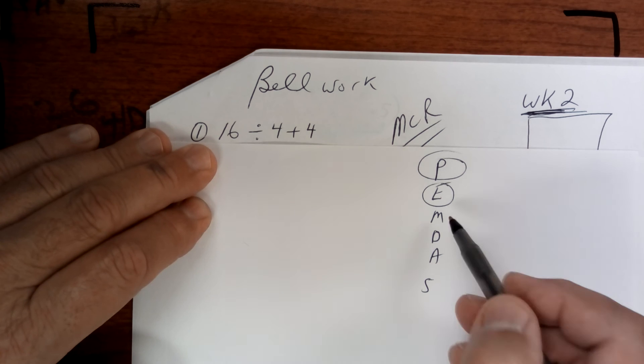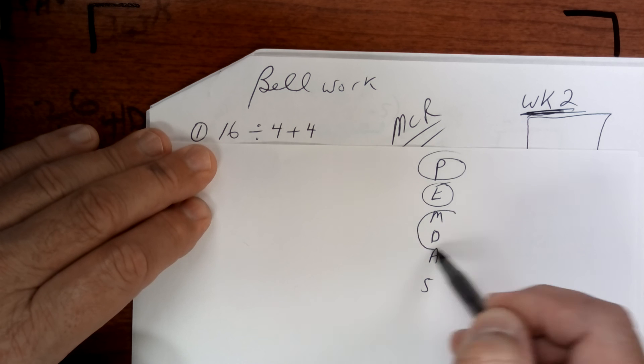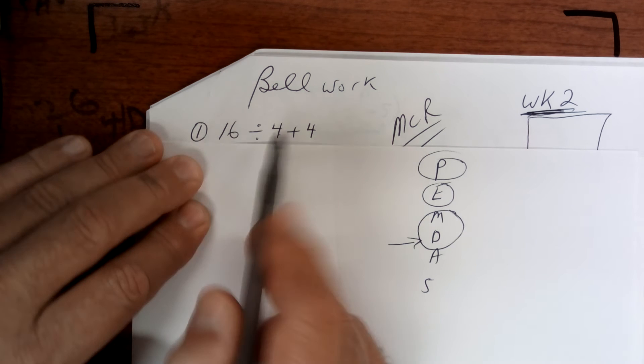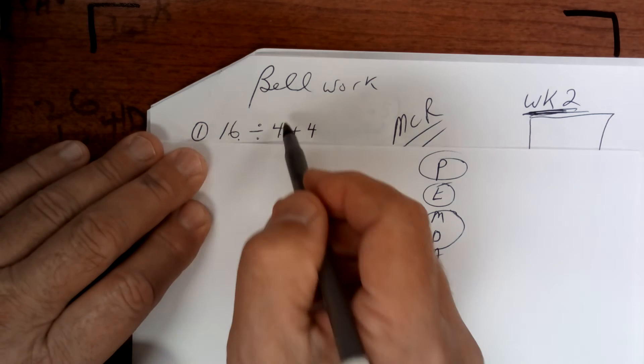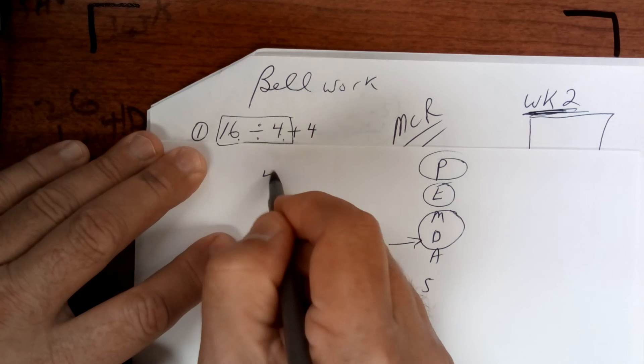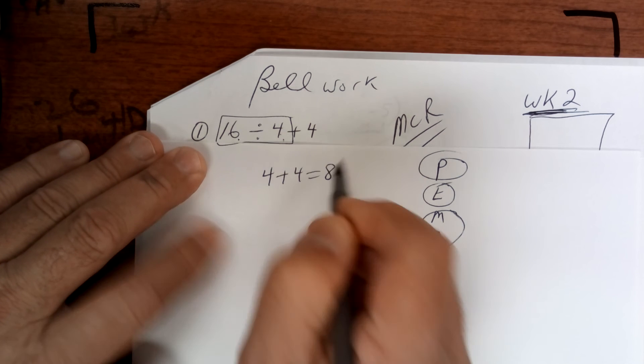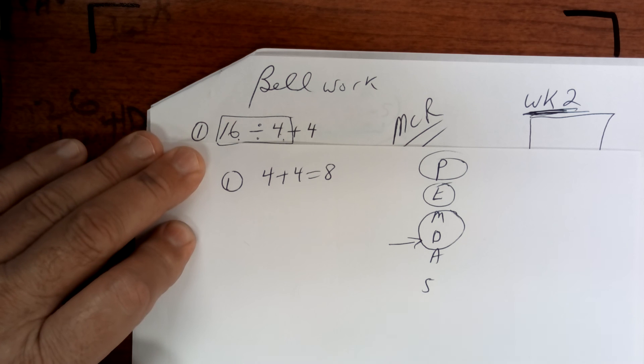But multiplying and dividing - there is dividing, so we're going to divide first. So 16 divided by 4 is going to give you 4 plus 4 equals 8. So number 1 should be 8.